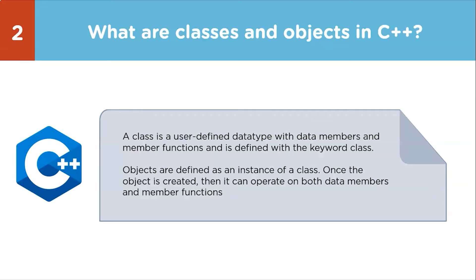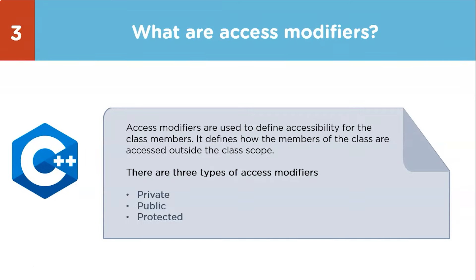The third question: what are access modifiers? Access modifiers define accessibility for class members — how members are accessed outside the class scope. There are three types: private, public, and protected. Private members cannot be accessed directly from outside the class; they can only be accessed by member functions inside the class. Public members can be accessed from within and outside the class. Protected members can be accessed from within the class and from derived classes.